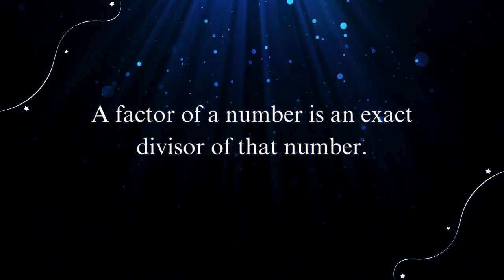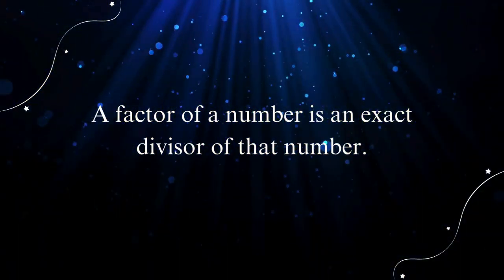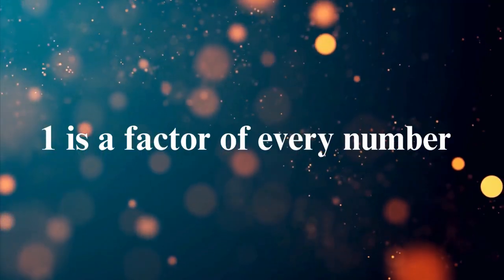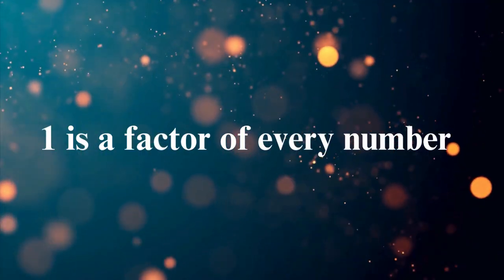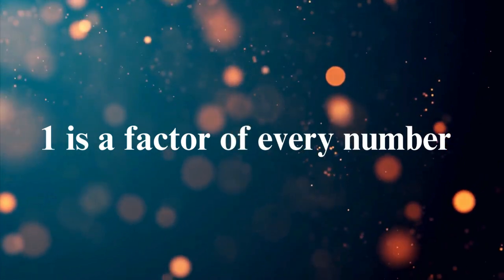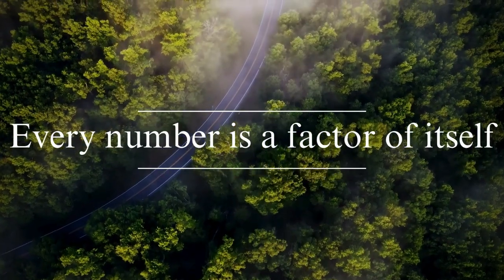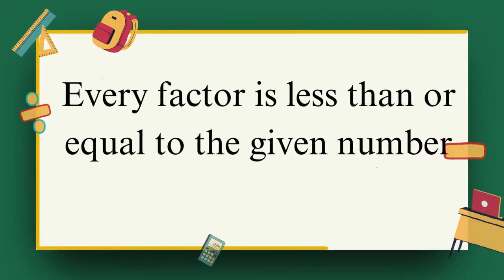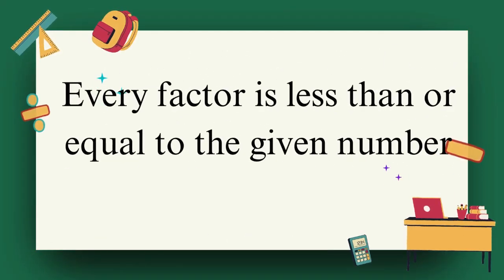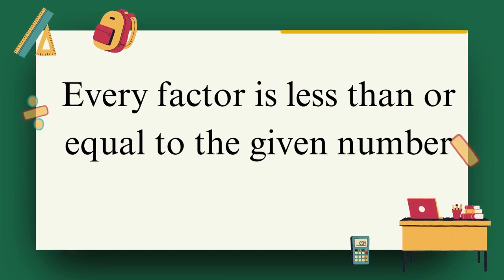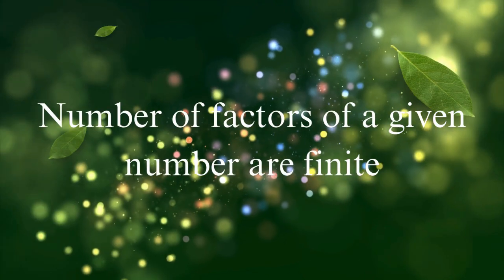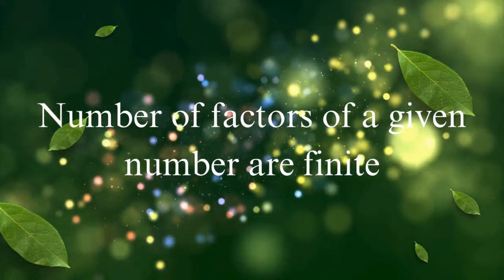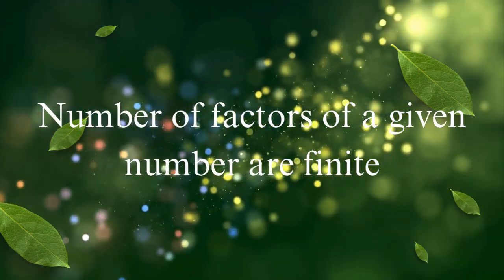A factor of a number is an exact divisor of that number. One is a factor of every number. Every number is a factor of itself. Every factor is less than or equal to the given number. The number of factors of a given number are finite.